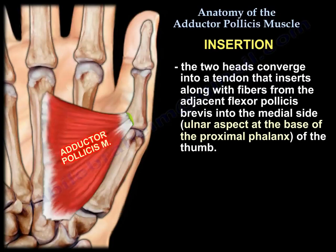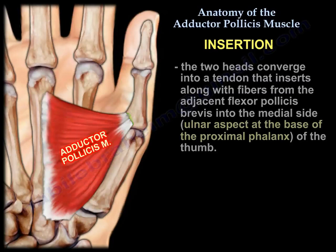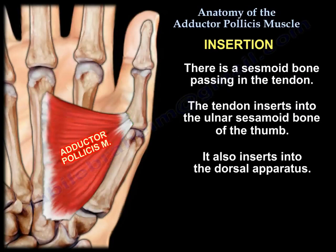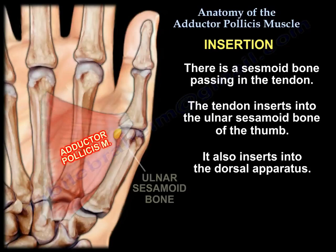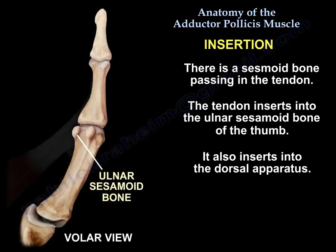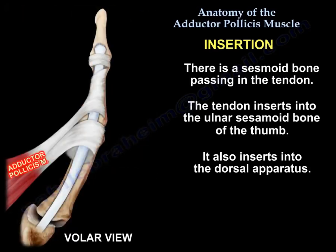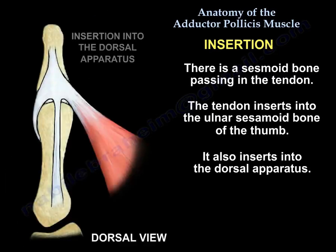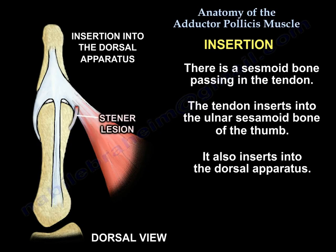Insertion: the two heads converge into a tendon that inserts, along with fibers from the adjacent flexor pollicis brevis, into the medial side — the under aspect — of the base of the proximal phalanx of the thumb. There is a sesamoid bone present in the tendon, so the tendon inserts into the under sesamoid of the thumb. It also inserts into the dorsal apparatus.